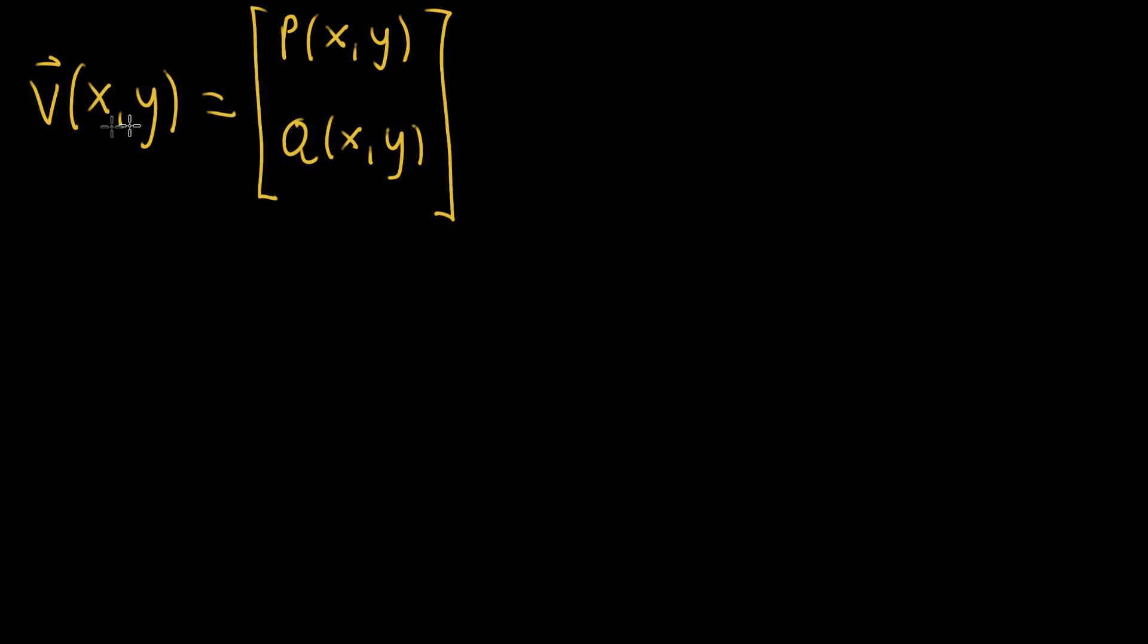So I've said that if you have a vector field, a two-dimensional vector field, with component functions p and q, that the divergence of this guy, the divergence of v, which is a scalar-valued function of x and y, is by definition the partial derivative of p with respect to x, plus the partial derivative of q with respect to y.